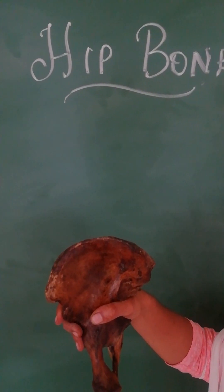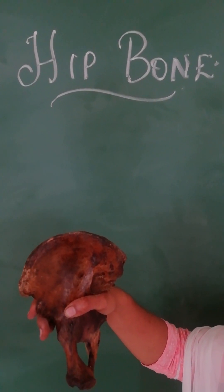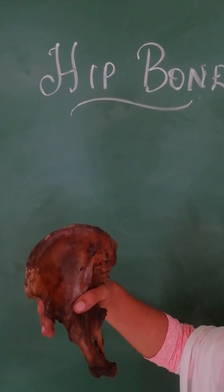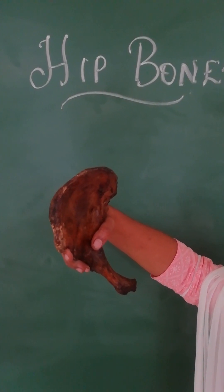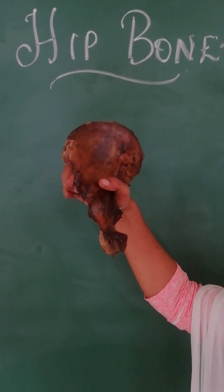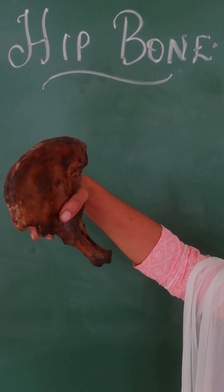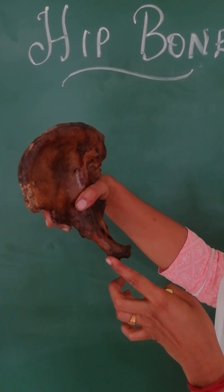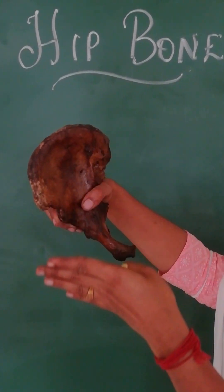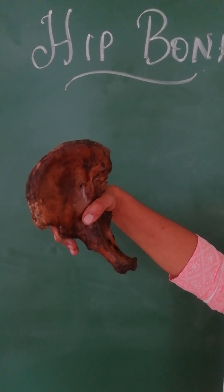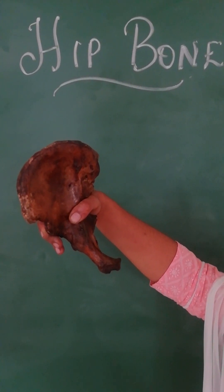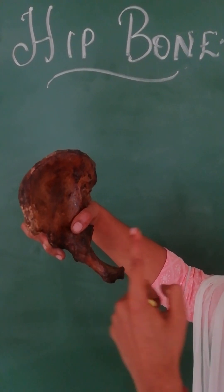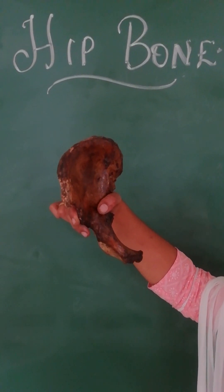Talking about the hip bone, to see the anatomical position, the hip bone should be placed slightly oblique and downwards with the plane passing between the anterior superior iliac spine and the pubic tubercle at the same level. This is the normal position. The hip bone is a bilateral bone, seen on either the right side or the left side.